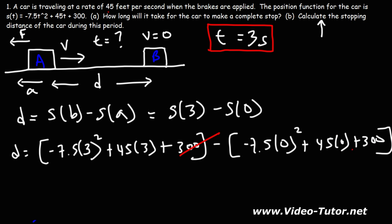300 minus 300, that's going to cancel to 0. 3 squared is 9, and negative 7.5 times 9, that's negative 67.5.